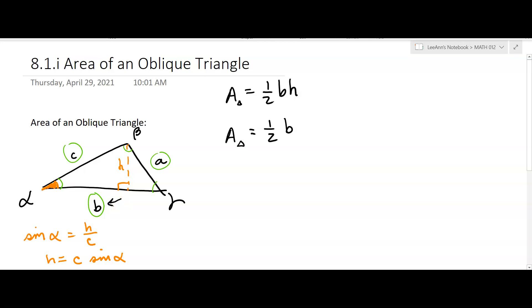a formula. Now you might be saying, well what if they don't tell me B and C and they don't tell me alpha? Well that's okay, we have other formulas. They look like this: one-half a C